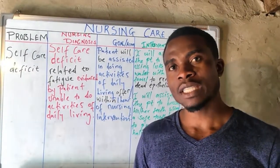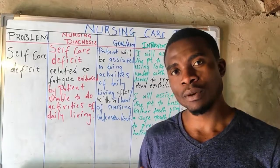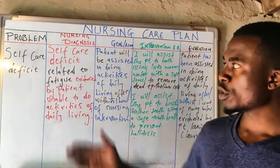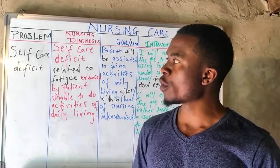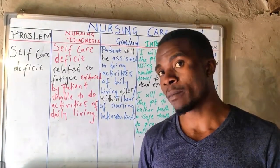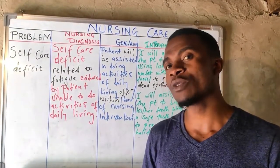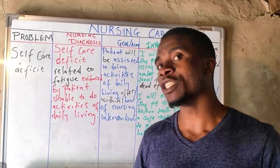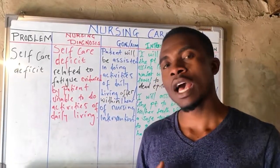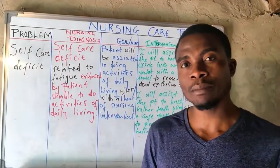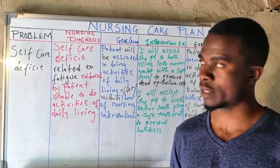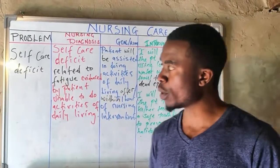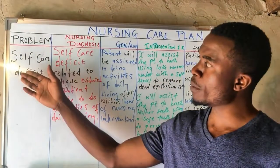In an exam, I advise you to write at least three actual problems and two potential problems. In this lecture, I'm going to give you a practical example of how you can write an actual problem — a general actual problem that is applicable in the majority of conditions. Let's get to the board.